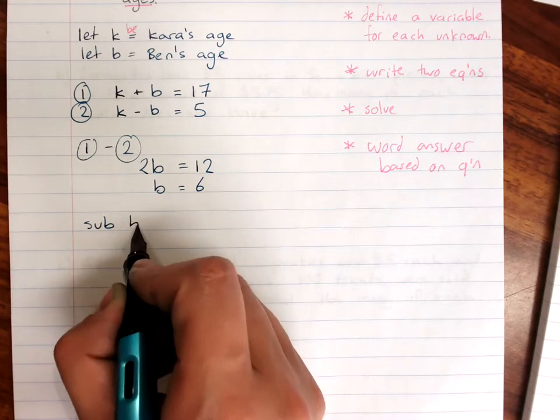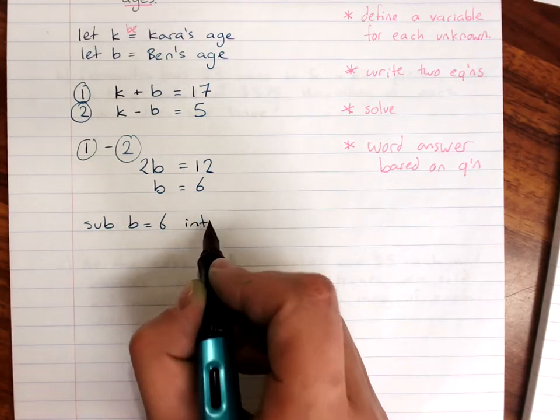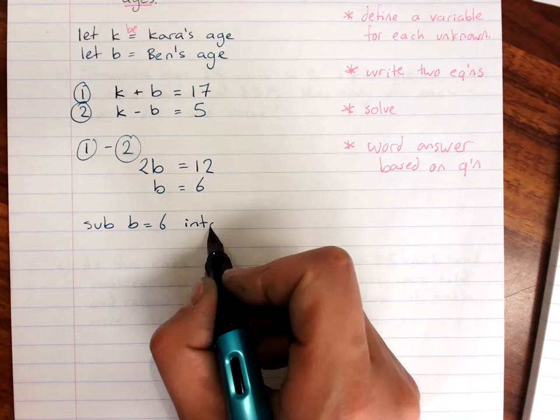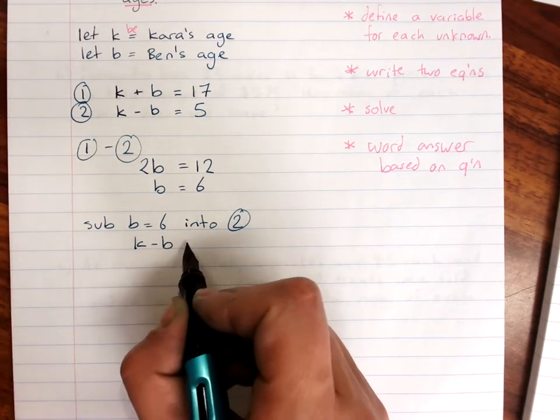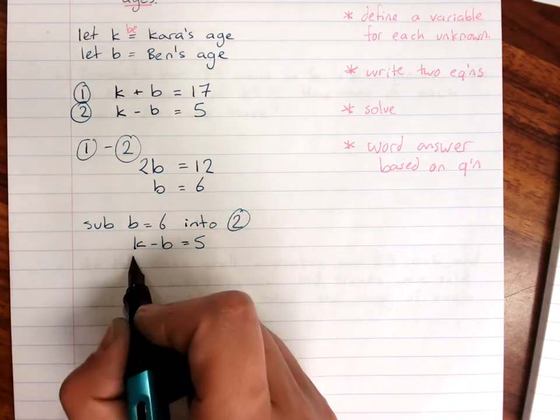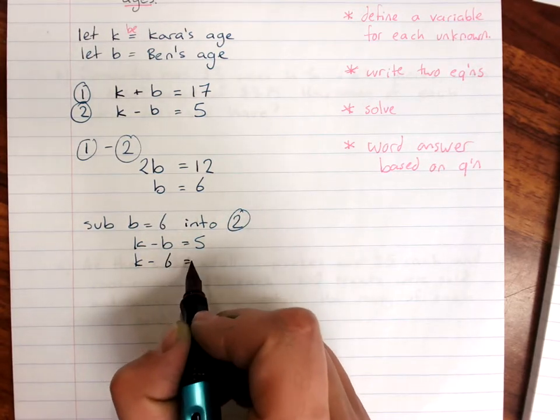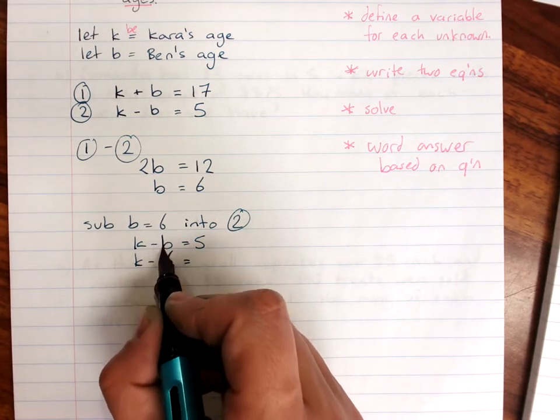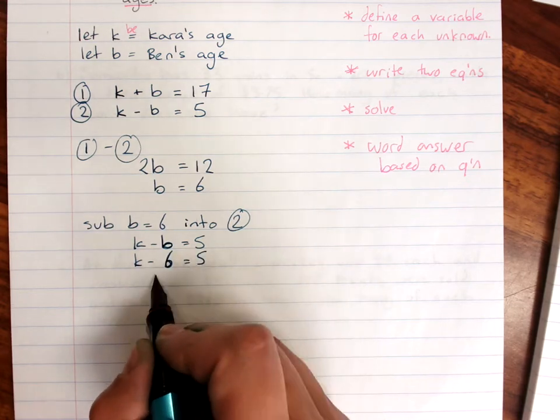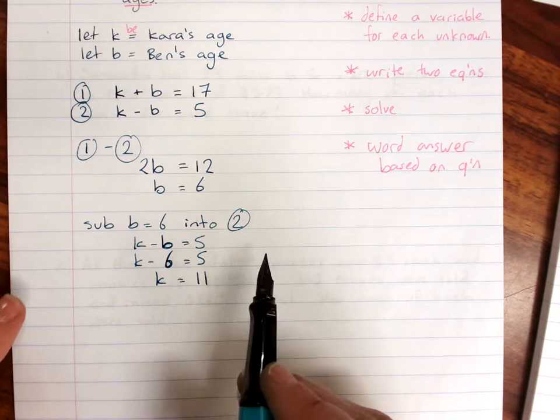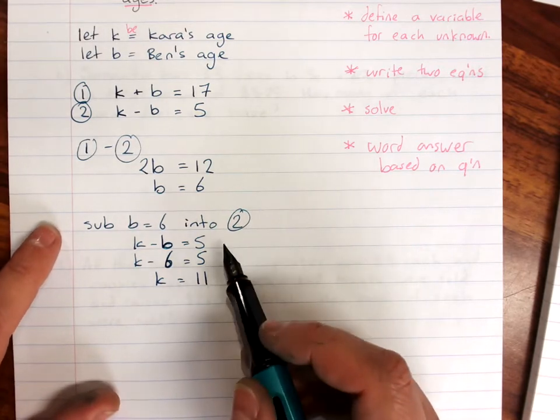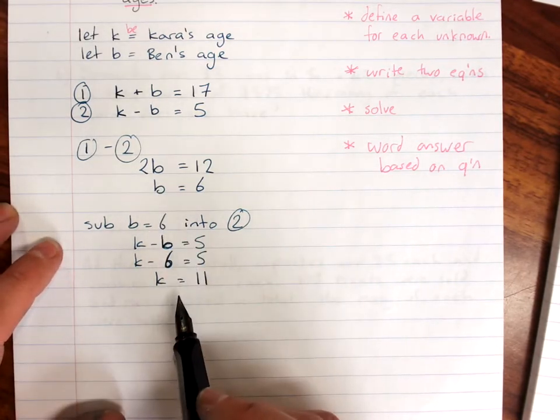Substitute b equals 6 into... It doesn't really matter which. Let's use equation 2. Write the equation. k minus 6. That's a 6. That's a b. That's a b is 5. So k equals 11. And now you have your solution.